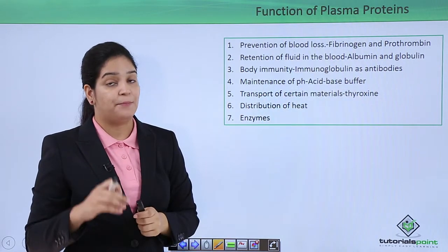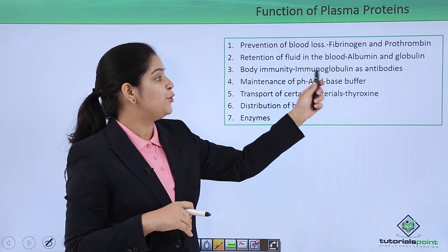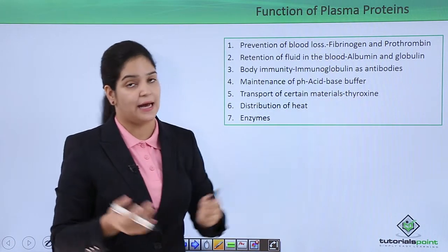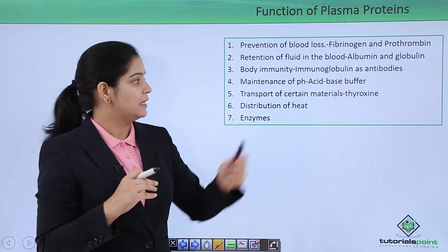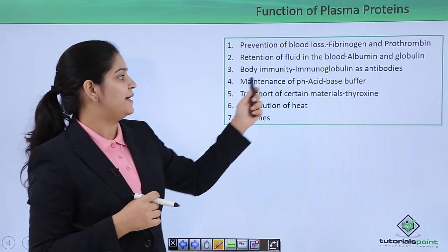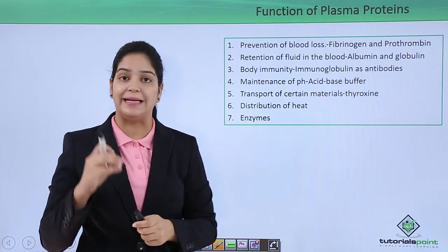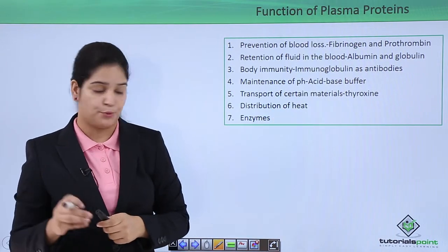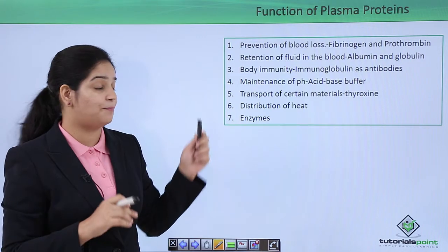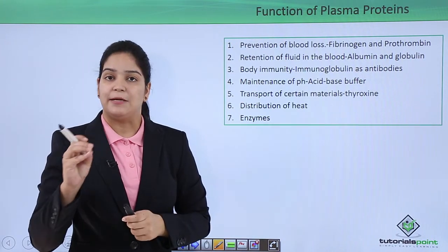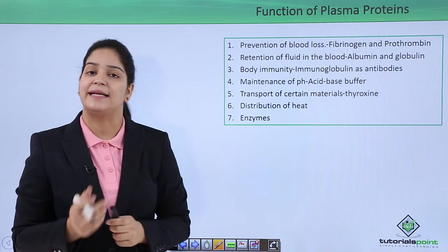Immunoglobulin is the protein working as antibodies. All antibodies are immunoglobulin, but all immunoglobulin are not antibodies. Next, maintenance of pH — the blood plasma maintains and neutralizes the acid-base balance, acting as a pH buffer of the system. Next, transport of certain materials — mainly the hormone thyroxine is transported by a plasma protein. Next, uniform distribution of heat throughout the body is done by plasma proteins. Some plasma proteins also work as enzymes.